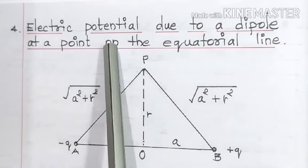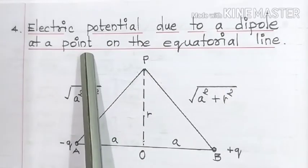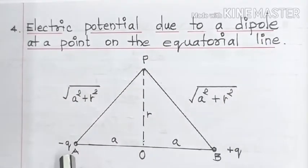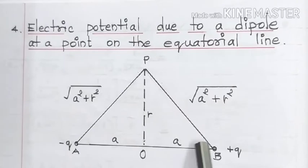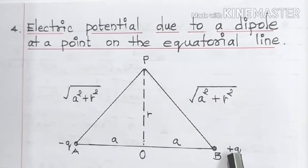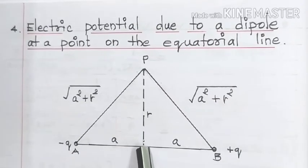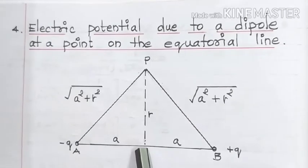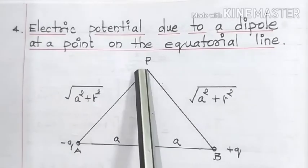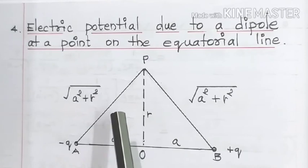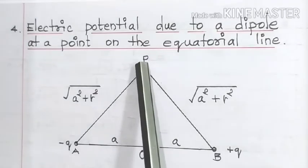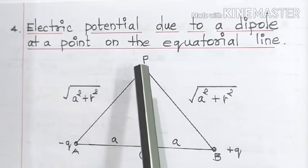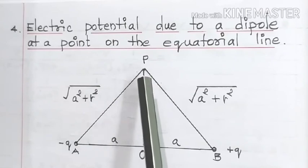Electric potential due to a dipole at a point on the equatorial line. So this is the electric dipole, and the line which is drawn perpendicular to the dipole is called the equatorial line. Now the point lies on this equatorial line, and at this point we are going to calculate the electric potential.